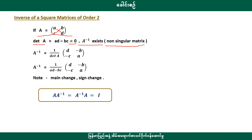Then 1 over the determinant of the matrix gives the inverse. When you multiply it, the term is minus 4. You can multiply the term of minus 4.